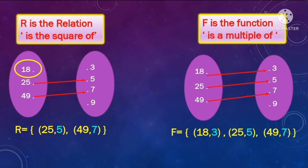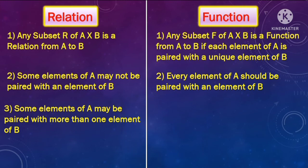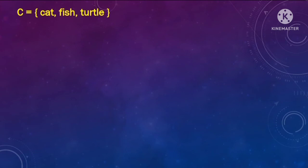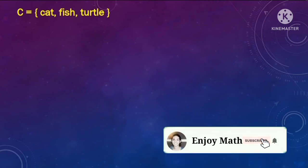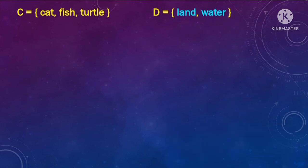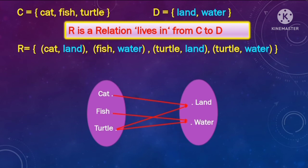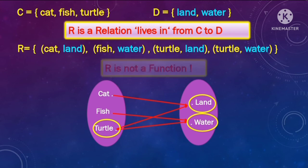The third important difference is that in a relation, some elements of set A may actually be paired with more than one element from set B. But in a function, no element of set A should be paired with more than one element of set B. So let's take another example. Here I have set C with the elements cat, fish, and turtle, and set D with the elements land and water. Let's define a relation R called 'lives in' from set C to set D. You can clearly see that the element turtle from the first set has been paired with land as well as water — paired with more than one element from the second set, which is not allowed in a function. So although R is definitely a relation, it cannot be called a function.